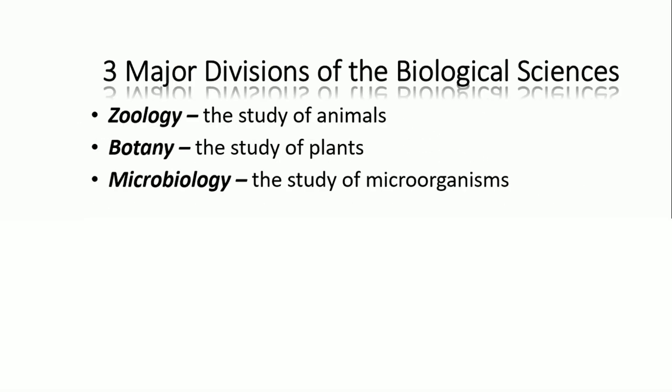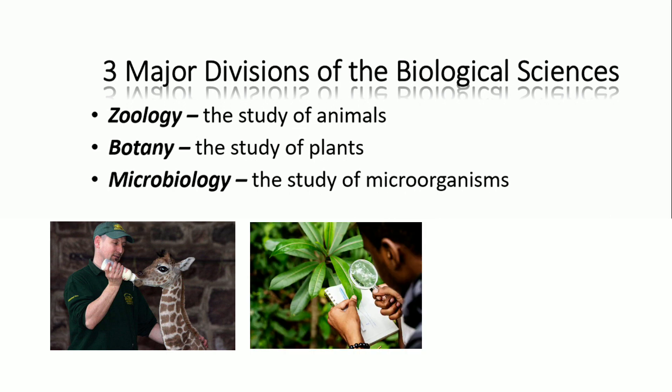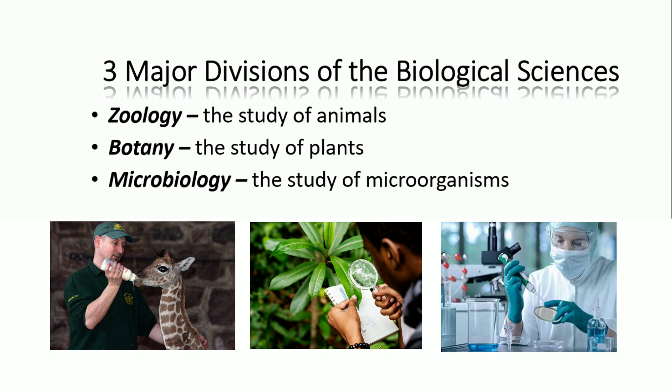What are the three divisions of the biological sciences? First is zoology, which is the study of animals. Second is botany, which is the study of plants. Third is microbiology, which is the study of microorganisms.